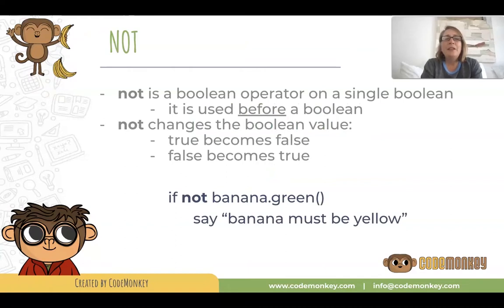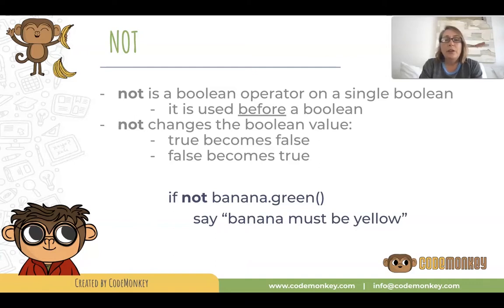NOT is a boolean operator on a single boolean. It is used before a boolean. NOT changes the boolean value, so true becomes false and false becomes true.